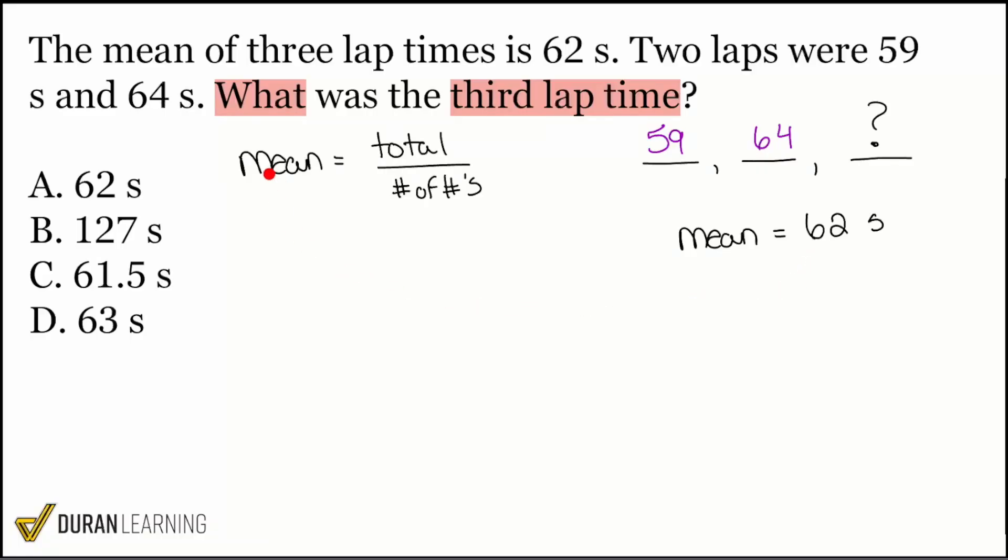And there are two of these things that we already know. Everyone help me out. What is the mean that we were given? It's right there. That mean is 62. We'll write that down. We'll plug it right in. Boom, right there. It's 62. We were given it. Then we also know the number of numbers. Everybody, if we knew the third lap time, how many numbers are we given? How many numbers are we working with? Three. Absolutely.